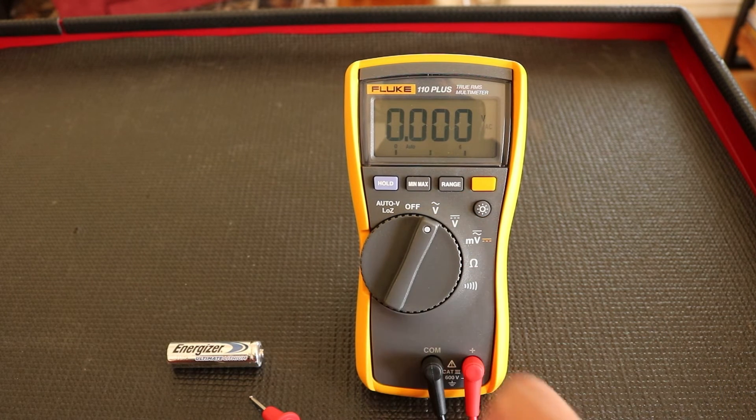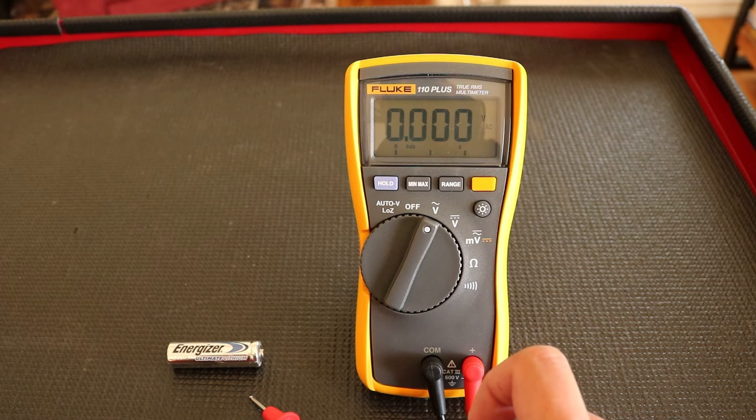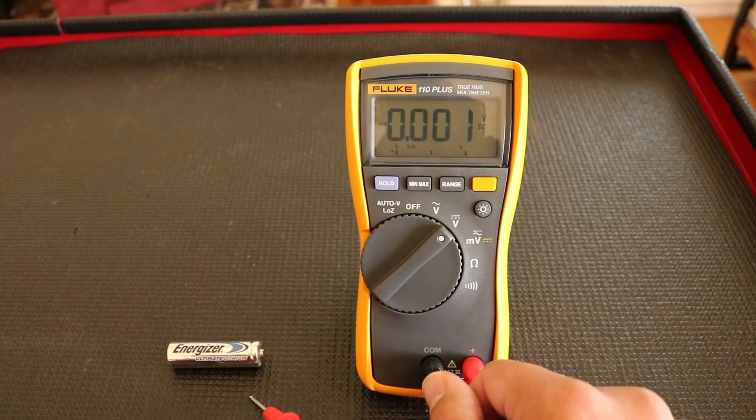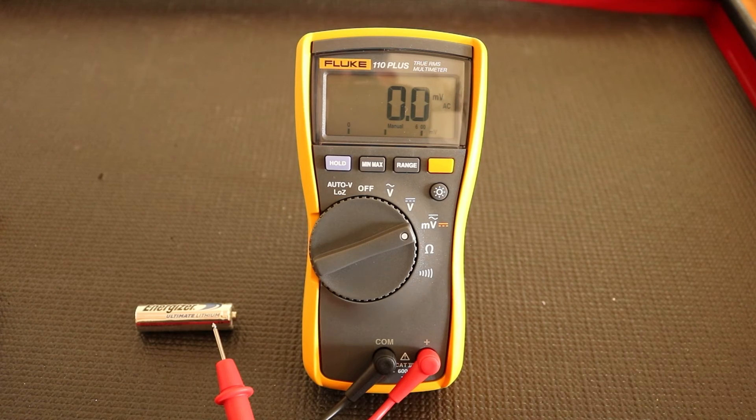So going back to this, this is the AC voltage jack right here. Below it is the direct current.